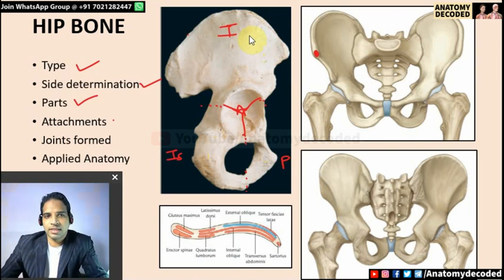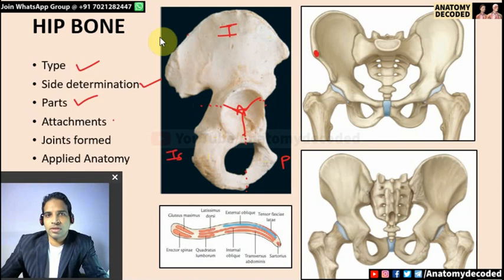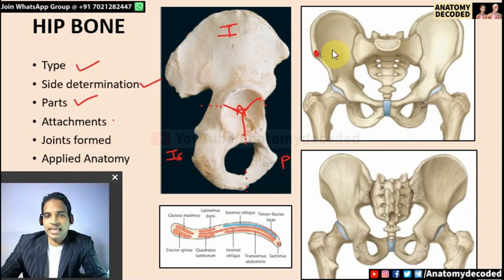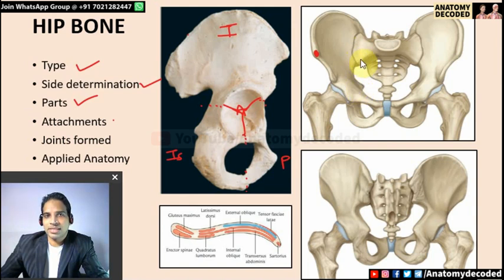In the ilium, we should know its borders and surfaces. There is the anterior border, posterior border, and the superior border also referred to as the iliac crest. There is also a medial border. The surfaces are: the iliac fossa (also called iliac surface), the gluteal surface on the lateral aspect, and the sacro-pelvic surface — the area articulating with the sacrum and the lower aspect.